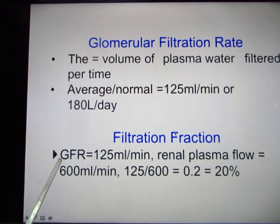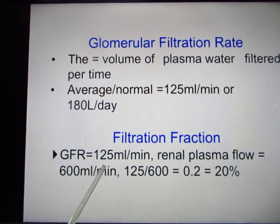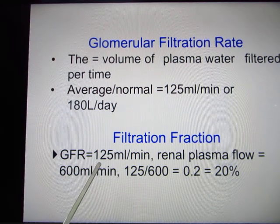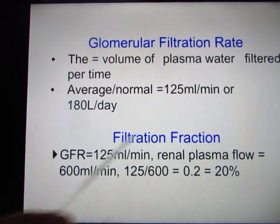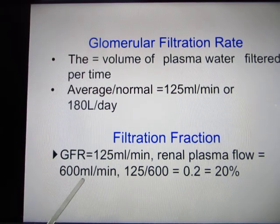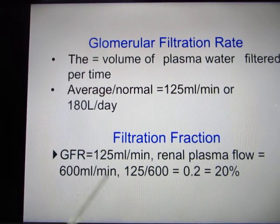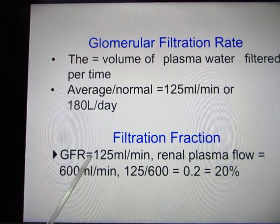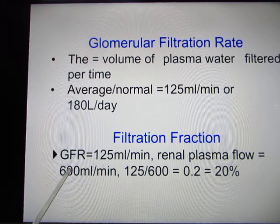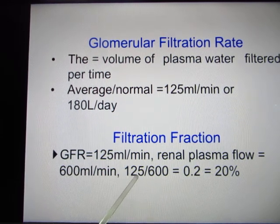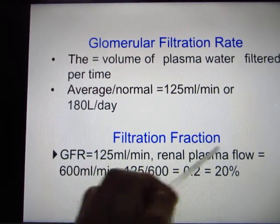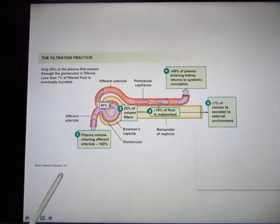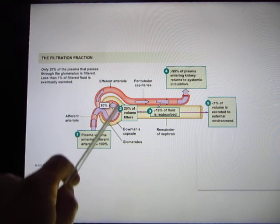Now let's look at the filtration fraction. You have about 125 ml of blood going to the nephron per minute, but on the renal plasma flow you have about 600 ml per minute going to your kidney. So only 125 ml really goes into the nephron out of 600 ml going to the kidney — doing the math, about 20% of your blood is being cleaned.